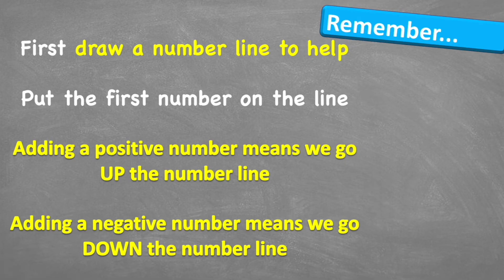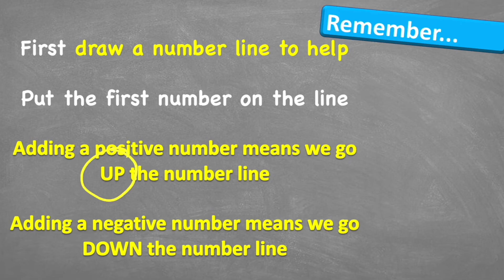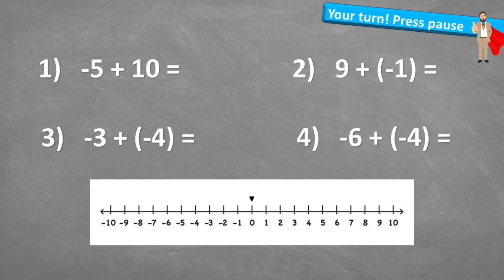Let's think about what to remember. First, we need to draw a number line to help us. Then we're going to put the first number on the line, and then we're going to remember our two rules: adding a positive number means we go up the number line; adding a negative number means we will come down the number line. Here are four questions for you to have a go at — try and work out the answers and put them in the comment section.